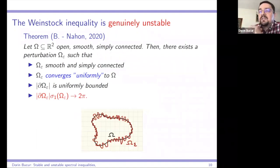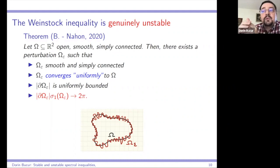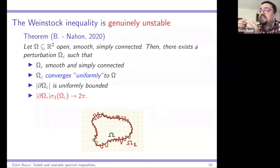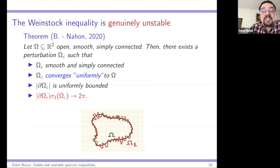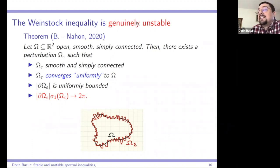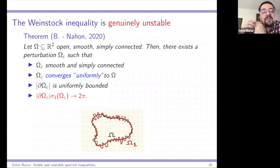We were working with Michael Known on the Robin problem and with Alessandro Giacomini, and we learned that for the Weinstock inequality in two dimensions the stability problem was open. We said: Robin is not so far from Steklov, so let's see if our techniques can be adapted. We found something surprising: the Weinstock inequality is genuinely unstable.